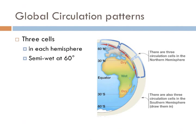Hadley cells are the circulation patterns that exist from 0 to 30 degrees. But there are also two other circulation patterns in both hemispheres. The other notable features of these circulation patterns occur around 60 degrees north and south. At these latitudes, there's a similar rise in air masses, and as they rise, they cool and condense, creating a fairly wet pattern around 60 degrees. This is why areas such as England, New York, and Seattle are so wet.